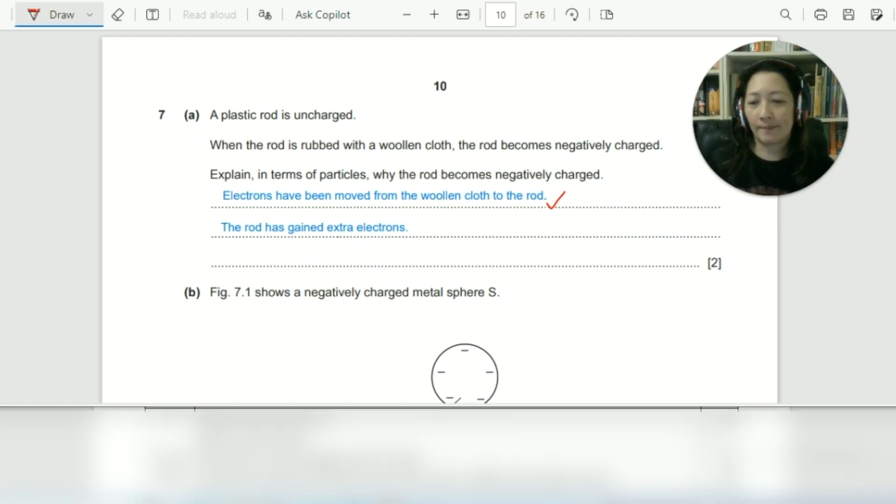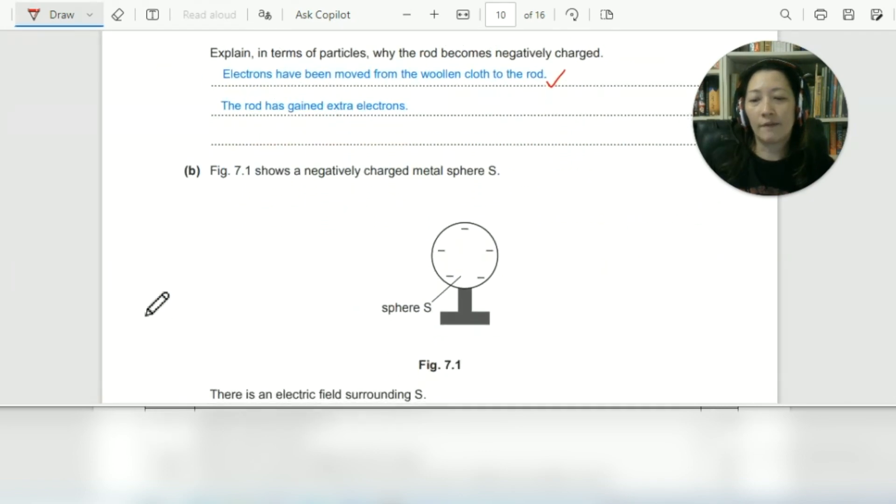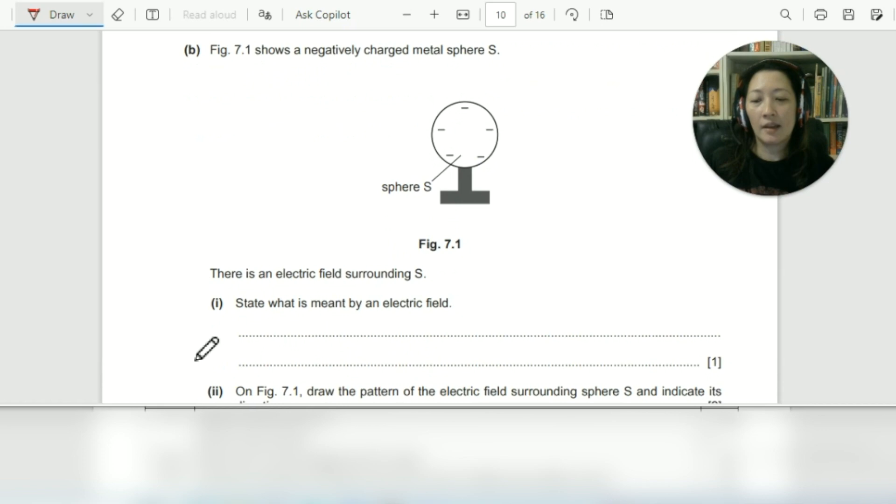Right, let's move on to B. Figure 7.1 shows a negatively charged metal sphere S. So here's the diagram. There is an electric field surrounding S. Number one, state what is meant by an electric field. This is a recall question. When they ask you for what is meant by, you need to write the definition. In this case, the definition of electric field. So an electric field is the region where an electric charge experiences a force.